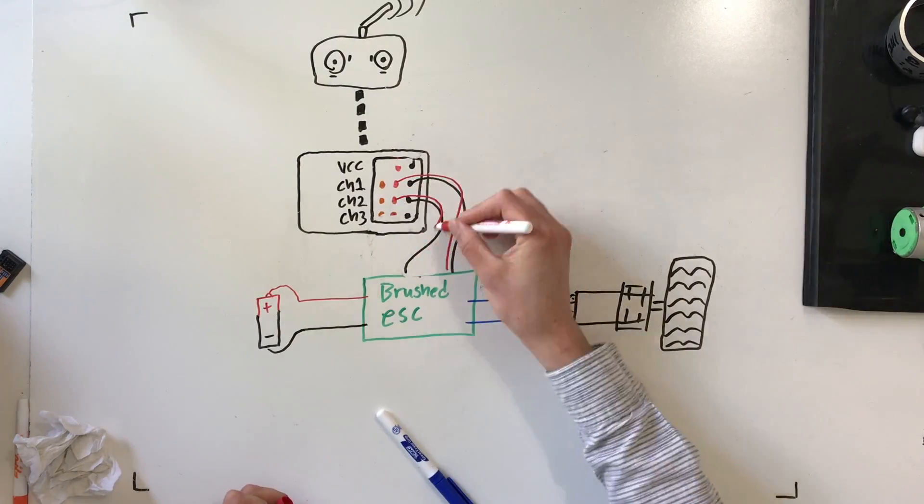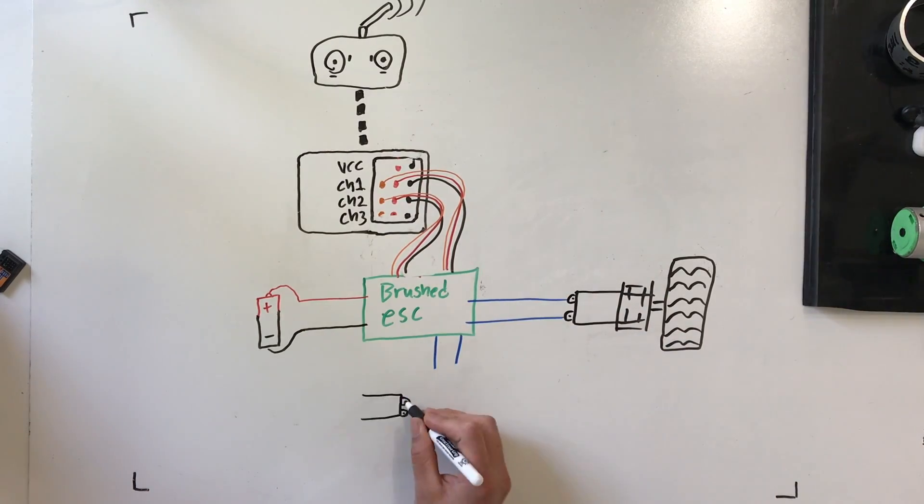Now some brushed ESCs are capable of powering two motors, which is really convenient because you can have one of those two-channel brushed ESCs control your right drive motor and then your left drive motor. Here's what that would look like wired up. You'll just have two signal wires, one for channel one and one for channel two, typically.